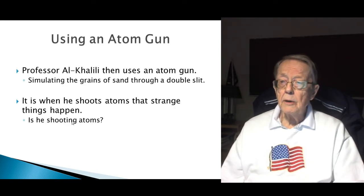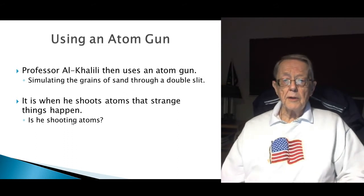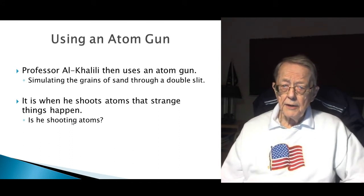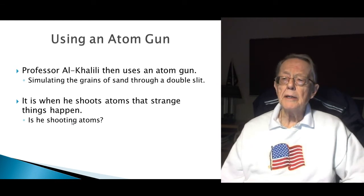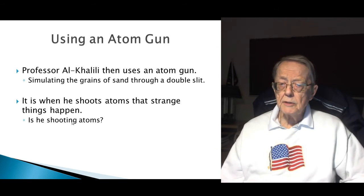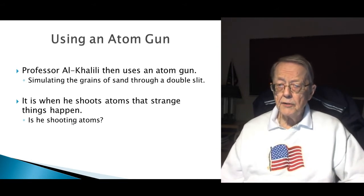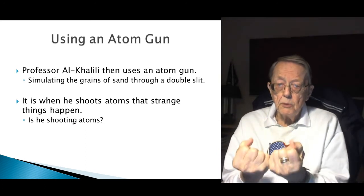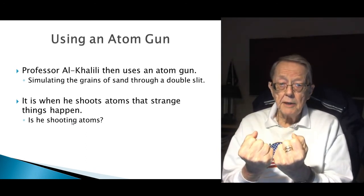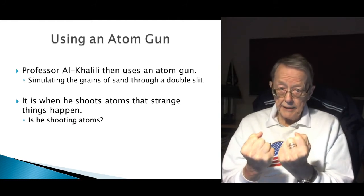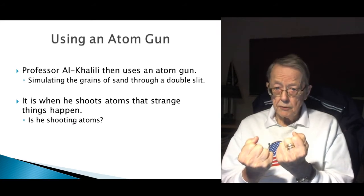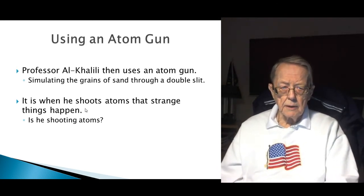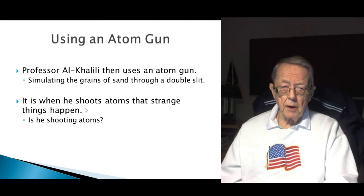But when he goes into the explanation and all the detail, he starts using an atom gun. Professor Al-Khalili is using the atom gun to simulate grains of sand. He showed how you can pour grains of sand through a screen with two slits, and as the sand goes through, it piles up in two piles. He uses that as a mechanical example, and he's going to use an atom gun, as he calls it, and shoot atoms through there to get what he wants - these two piles, two piles of sand or two bars on the target screen.